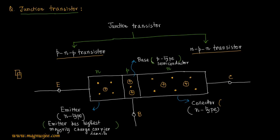The collector is the longest part of the transistor — that means the length of the collector is maximum. Now we can describe the function of the emitter.